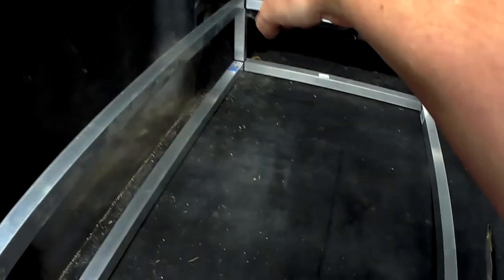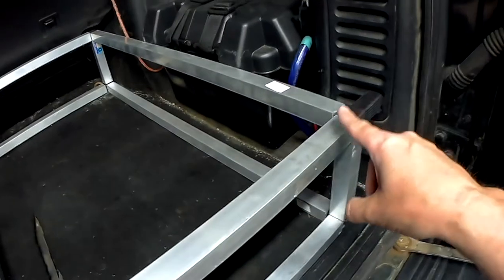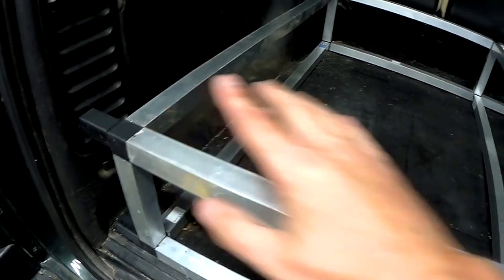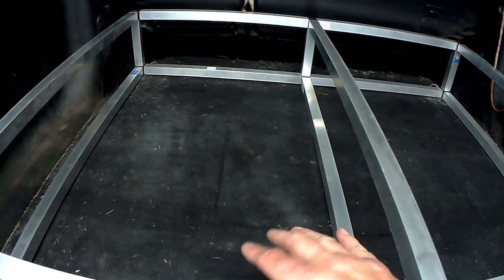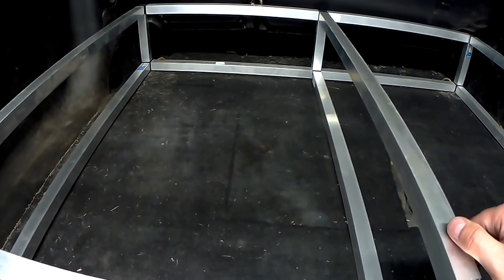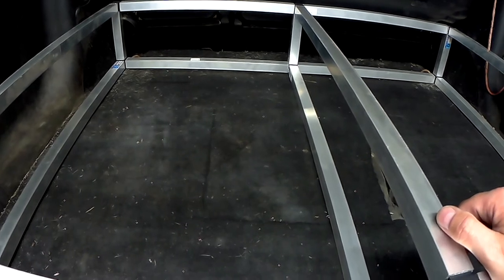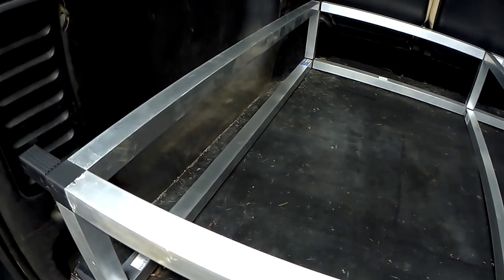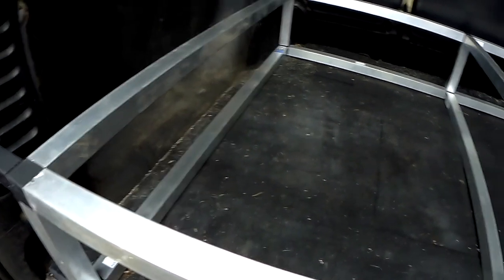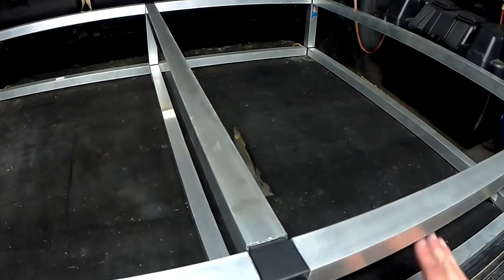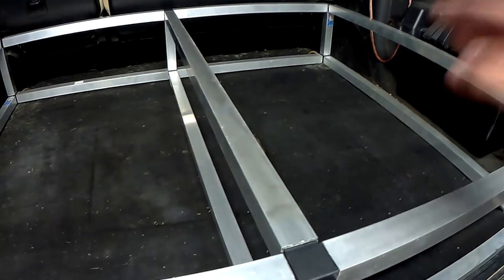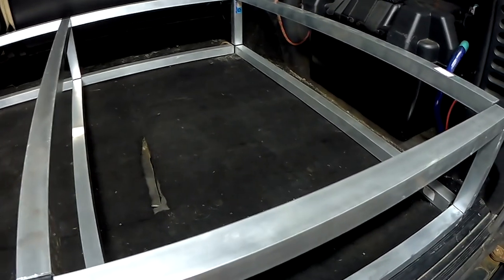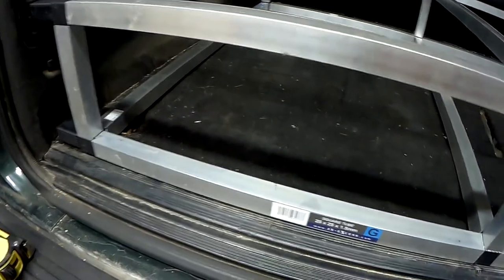Done a corner to corner measurement and the same that way and they're identical, so that proves that's nice and square. So that's the end of part one. Part two will be to get some wooden sides in here and the draw runners on. I need to order the draw runners now I know the size I need. And then we can build the drawers itself, the top and the fancy bits on the side. Thank you for watching, please subscribe for more Discovery 2 videos.